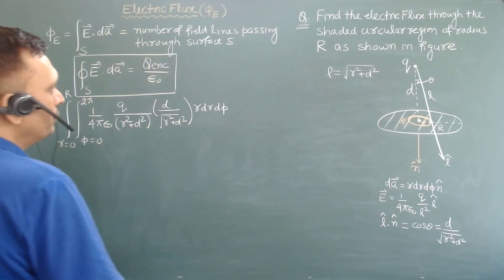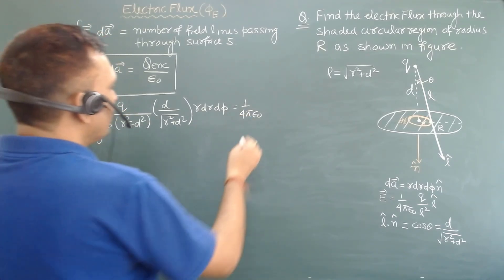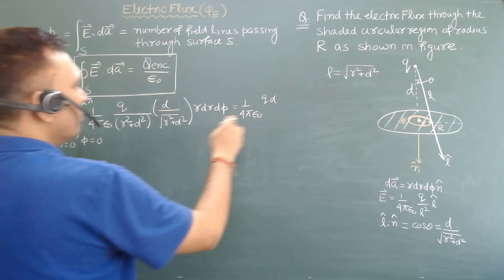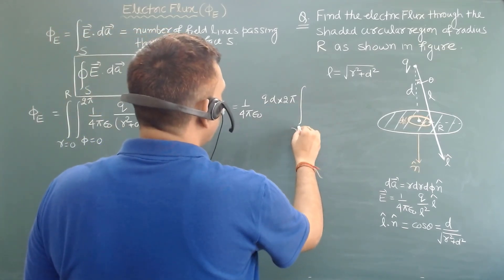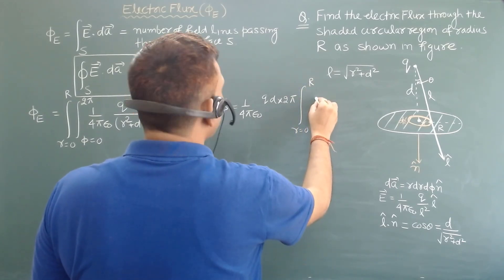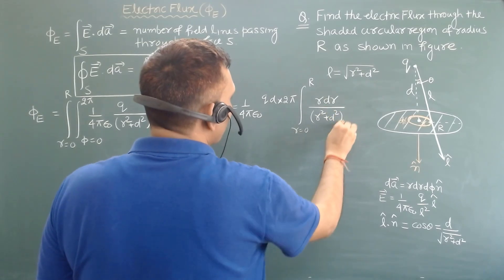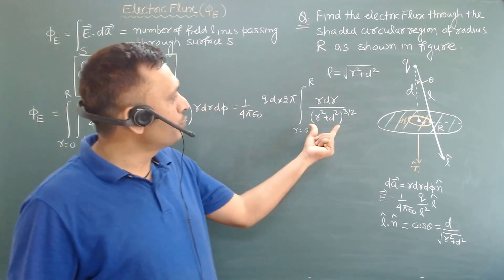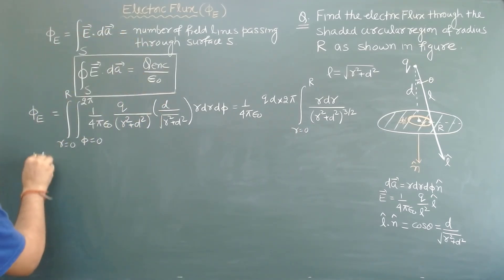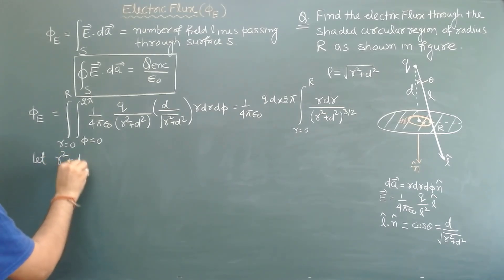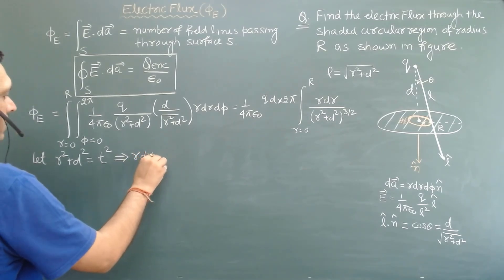Now we have to calculate this integral. The term q·d is common, and integrating over φ from 0 to 2π gives 2π. So we need to integrate r dr/(r² + d²)^(3/2) from r = 0 to r = R. To solve this, let t² = r² + d², so differentiating gives r dr = t dt.